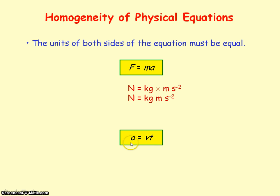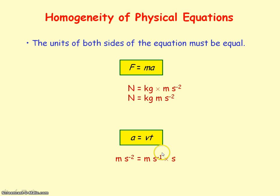That should equal the units of velocity — meters per second — multiplied by the units of time, which is seconds. However, meters per second multiplied by seconds means the seconds cancel, leaving just meters. So acceleration cannot have units of meters, and therefore this equation is not valid.